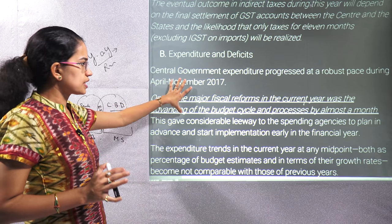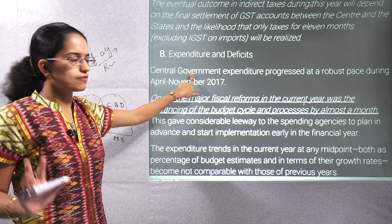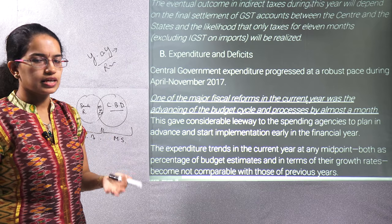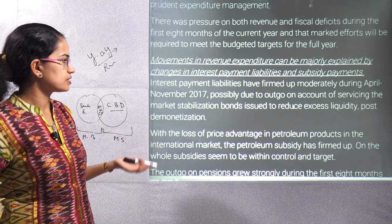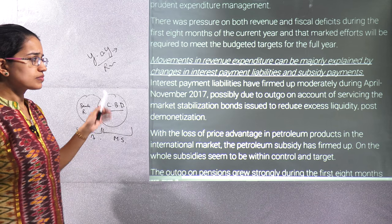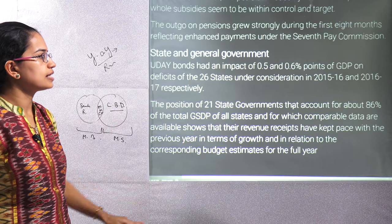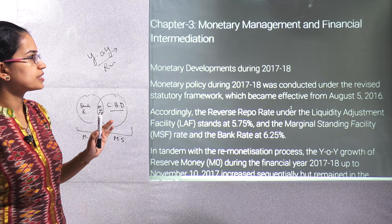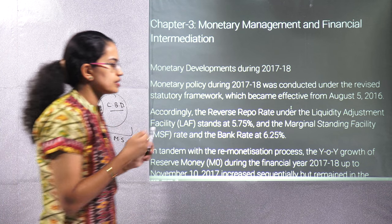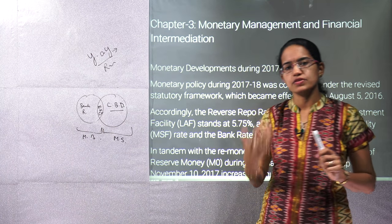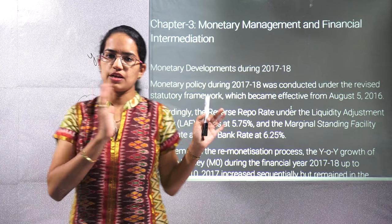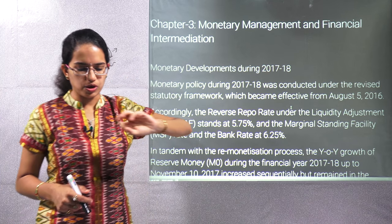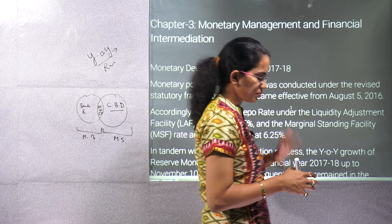The fiscal reforms cover advancing the budget cycle, processing it a month earlier so more expenditure is available for various ministries. We also talk about interest payment liabilities and subsidy payments. The third chapter focuses on monetary management and financial intermediation, specifically changes in the repo rate, reverse repo rate, and bank rate — all terminology discussed in NCERT economics.